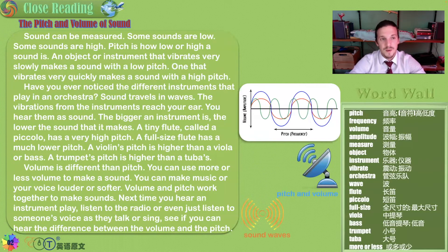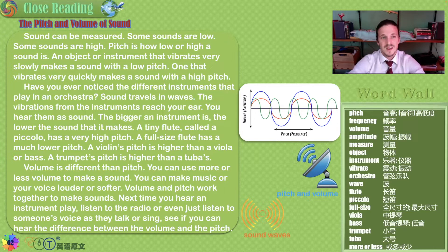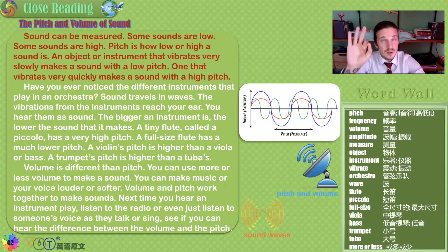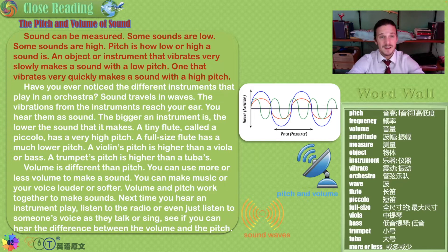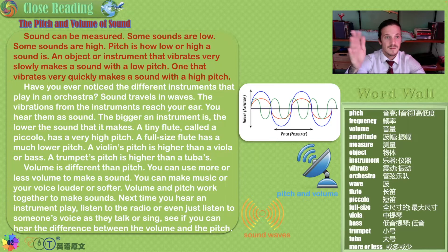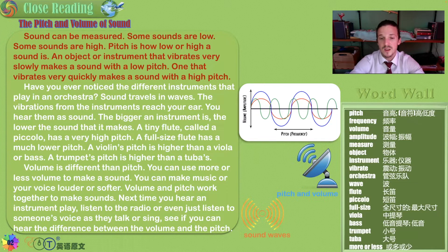Next, let's talk about the pitch and volume of sound. Sound can be measured. Some sounds are low and some sounds are high. Pitch is how low or high a sound is. An object or instrument that vibrates very slowly makes a sound with a low pitch. One that vibrates very quickly makes a sound with a high pitch.